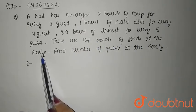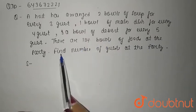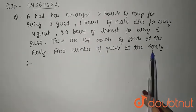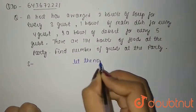There are 134 bowls of food at the party. So total bowls of food is 134 bowls. Find number of guests at the party. So let the number of guests be x.